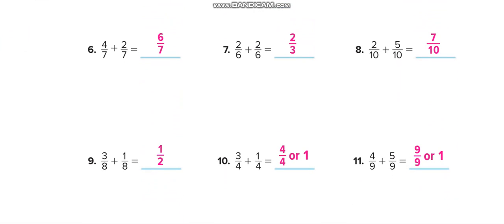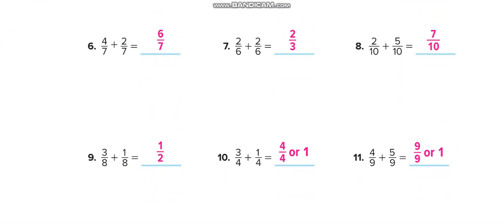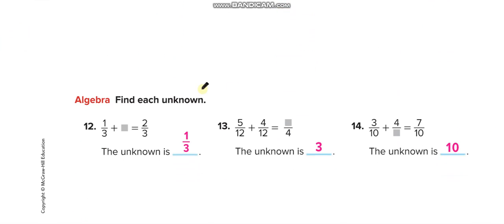Here we are finding the missing numbers. 1 third plus what equals 2 thirds? 1 third plus 1 third. 5 plus 4 is 9. Actually, it is 3 after simplification. It will be 9 over 12, then you will divide by 3, so 9 divided by 3 is 3 and 12 divided by 3 is 4.